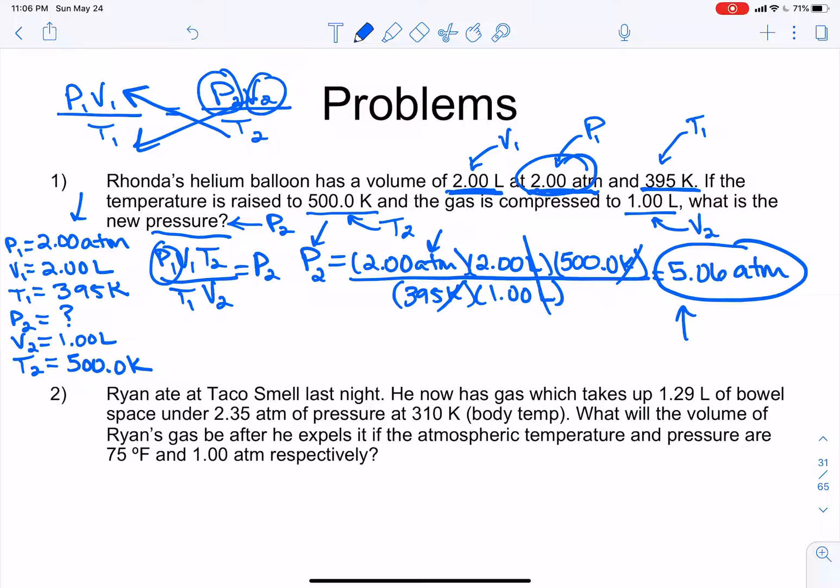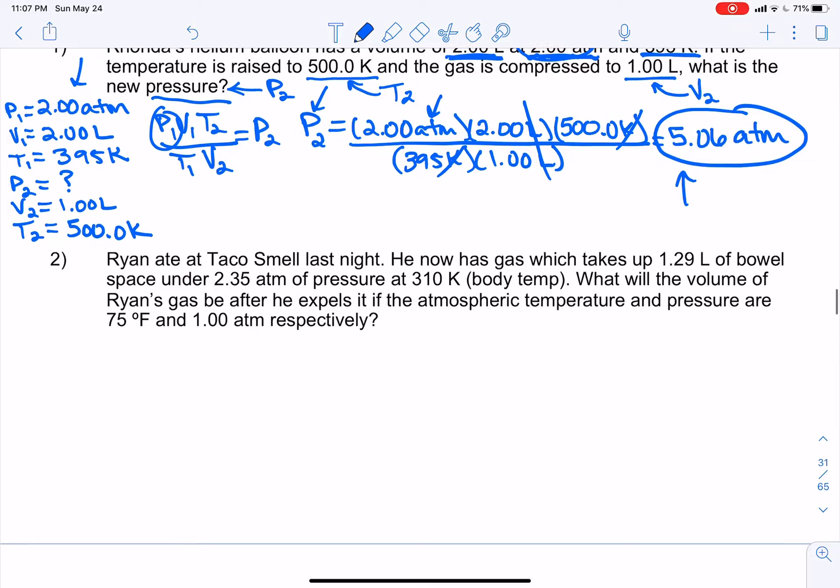All right. So Ryan ate a taco smell last night. He now has gas. And it takes up 1.29 liters of bowel space. And he is in pain. He has taken some gas X. And right now he's just waiting for it to work. And it's under 2.35 atm of pressure at 310 Kelvin. And this is body temperature in Kelvin. And we want to know what will the volume of Ryan's gas be after he expels it if the atmospheric temperature and pressure are 75 degrees Fahrenheit and 1 atm. All right. All right. Let's do it to it.